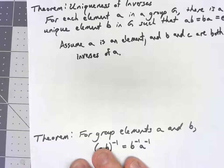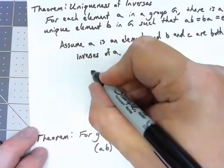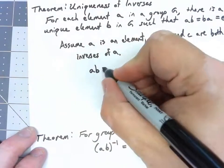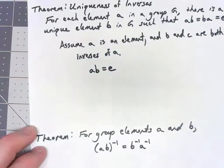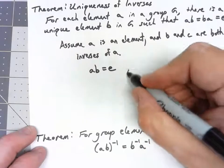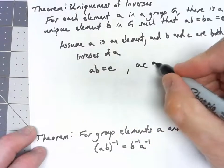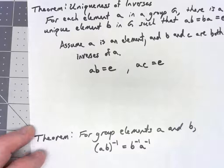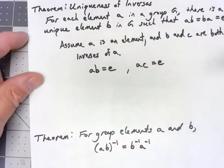That would mean that A times B is equal to the identity E, but also A times C would be equal to the identity E. Again, that's what it means to be inverses.